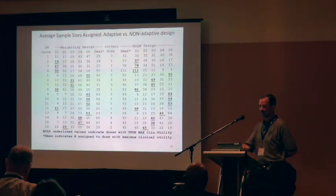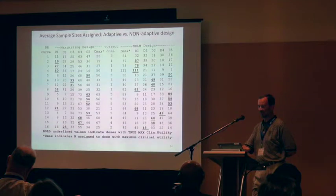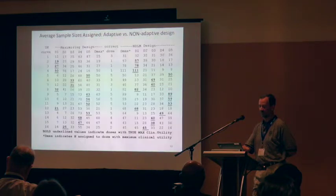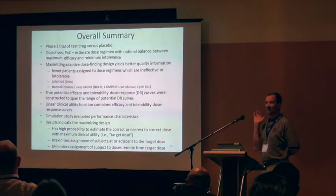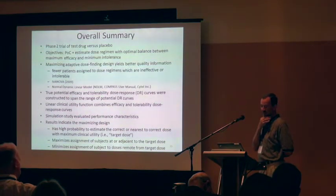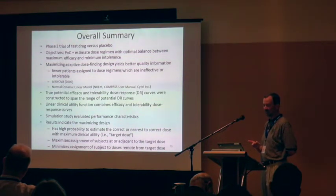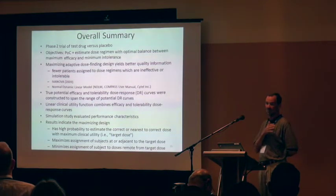Here are the number of subjects assigned, and you can see generally greater numbers of subjects assigned with the NDLM design than the maximizing design at the target. On the previous slide, the better performance in estimating the correct dose was also demonstrated. The summary is similar to case study one: higher probability of estimating the correct or nearly correct dose with maximum utility, using a linear utility function, and maximizing assignment at or adjacent to the dose with maximum utility while minimizing assignment away from it.